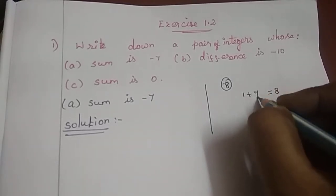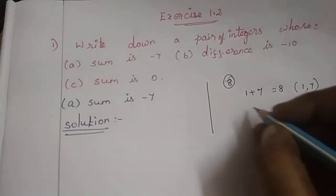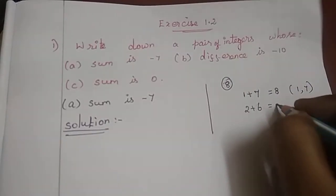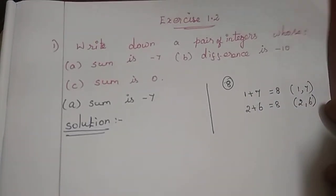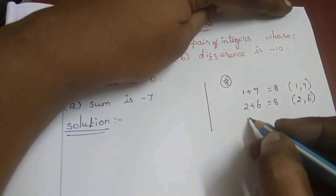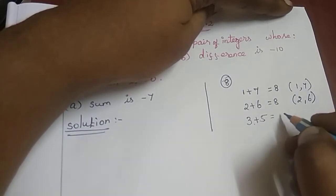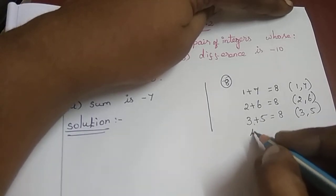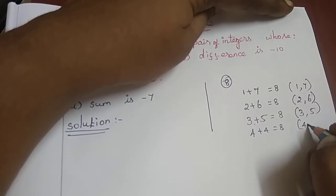1 plus 7 is 8. So first pair is 1, 7. Then 2 plus 6 is 8 — second pair 2, 6. Third pair: 3 plus 5 is also 8, so 3, 5. And 4 plus 4 is also 8, so 4, 4.